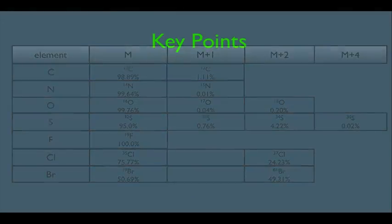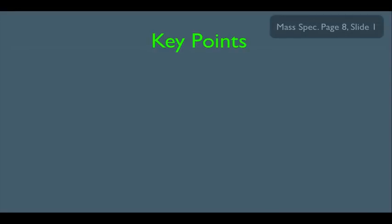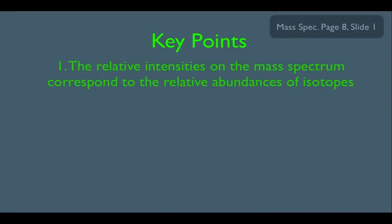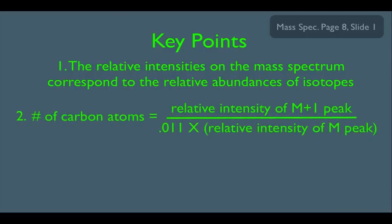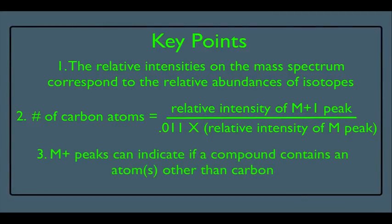I wouldn't rush to memorize all of these — most professors would give you this information, unless told otherwise. The key point is that relative abundances of many atoms are known, and these are just some examples.